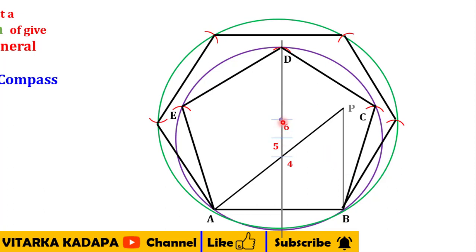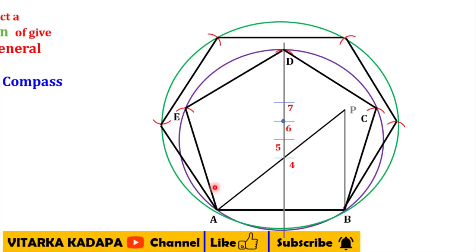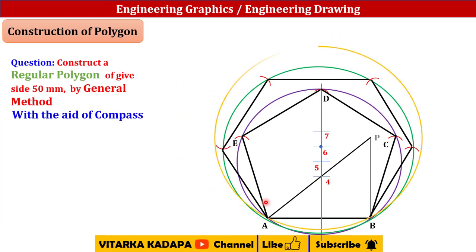Next, take the distance from point 5 to 6 and replicate that exact distance upward to get point 7. With center 7 and radius 7A, draw a circle. This orange circle is the circle for the heptagon — a polygon consisting of 7 sides.